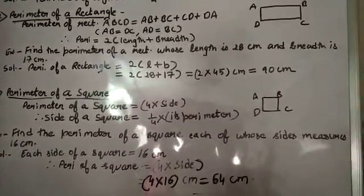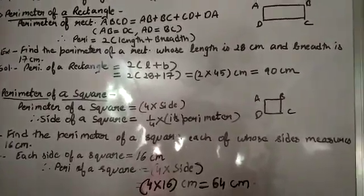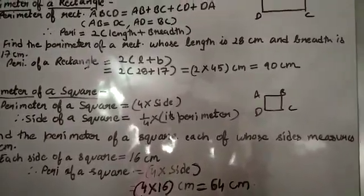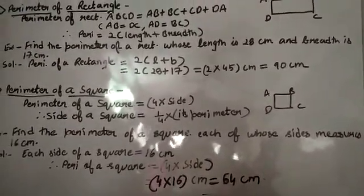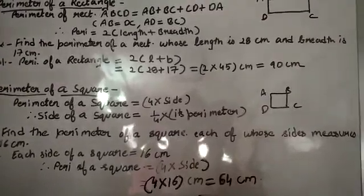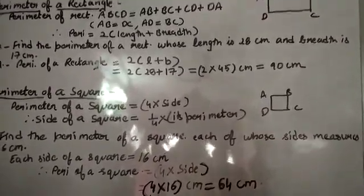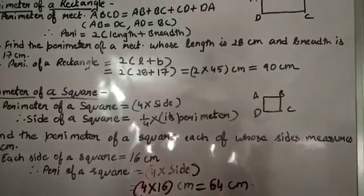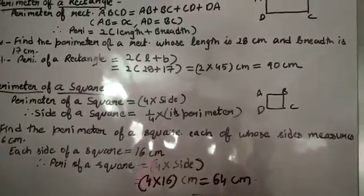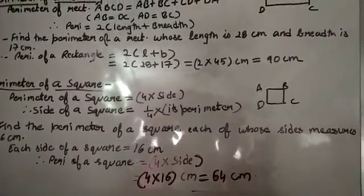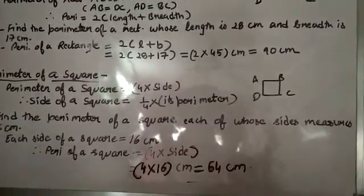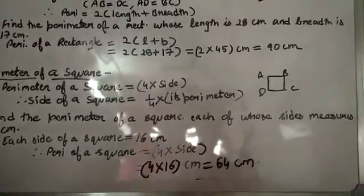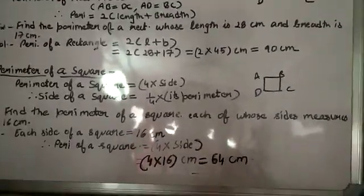Then perimeter of a square. Perimeter of a square is equal to 4 into a side. We all know in a square all four sides are equal, so there is no need to write all four sides four times — just write the measurement once and multiply by 4. Therefore, side of a square is equal to 1 upon 4 into its perimeter. This is the formula for finding the side of a square.